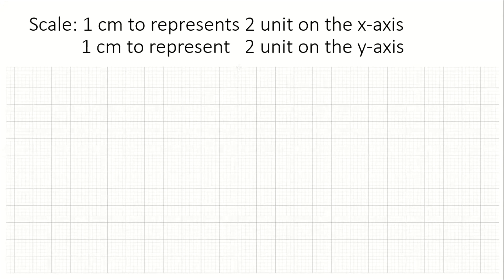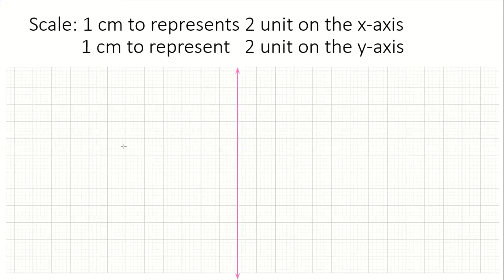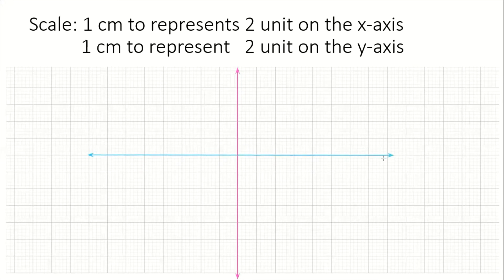I'm going to draw a vertical line that represents our y-axis. Your line should be straight, and then we're going to draw a horizontal line to represent our x-axis. Note that these two lines intersect each other, and the angle that is formed is 90 degrees, so they are perpendicular to each other.